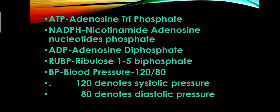The next one is NADPH — nicotinamide adenosine dinucleotide phosphate. ATP and NADPH both can trap the light energy, so they are called assimilatory powers. Next, ADP is adenosine diphosphate. It contains two phosphate molecules.